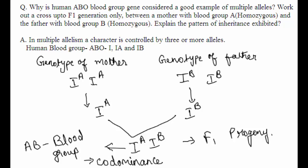What is multiple allelism? Multiple allelism is a character which is controlled by three or more alleles. The ABO blood group, seen in human beings, has three alleles: I, IA, and IB. That is why it is considered a good example of multiple alleles.